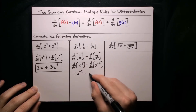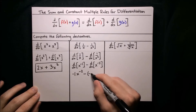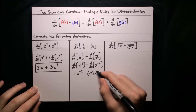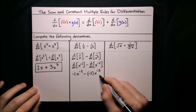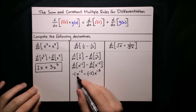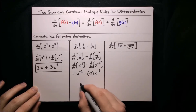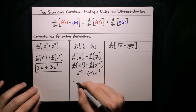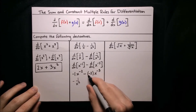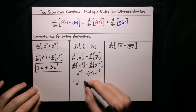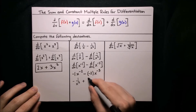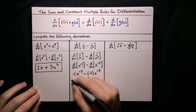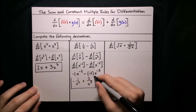Then minus: same idea — bring down the exponent negative 2, and decrease that exponent by 1, so it moves to negative 3. Now let's simplify: x to the negative 2 is just 1 over x squared, so we have negative 1 over x squared. And minus negative makes positive, so plus 2 over x cubed. There is our derivative.